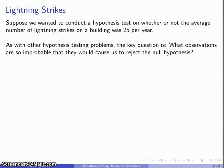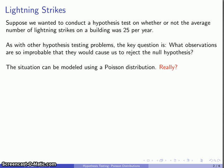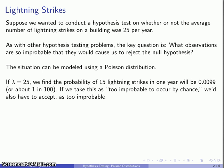We can model the situation using a Poisson distribution — you may want to convince yourself that this really is a situation where the Poisson distribution is appropriate. So we want to find out whether there's an average of 25 lightning strikes in one year, and we might determine that the probability of having 15 lightning strikes is going to be very small, and we might take this as an observation that is too improbable to occur by chance.